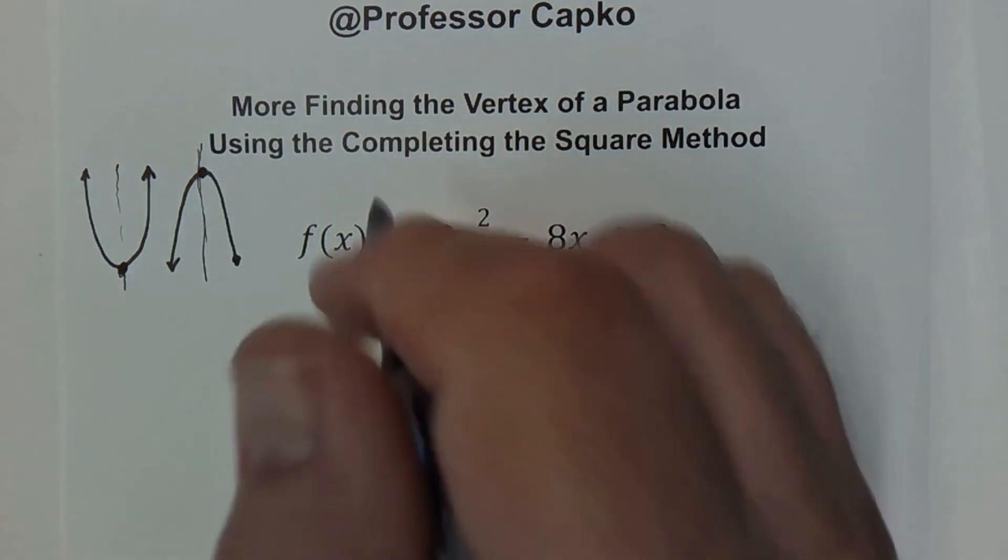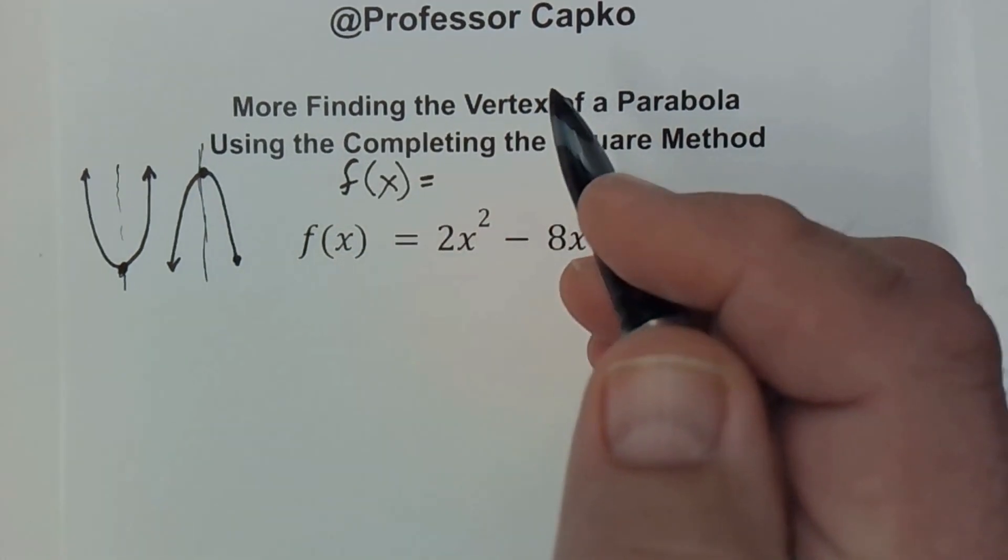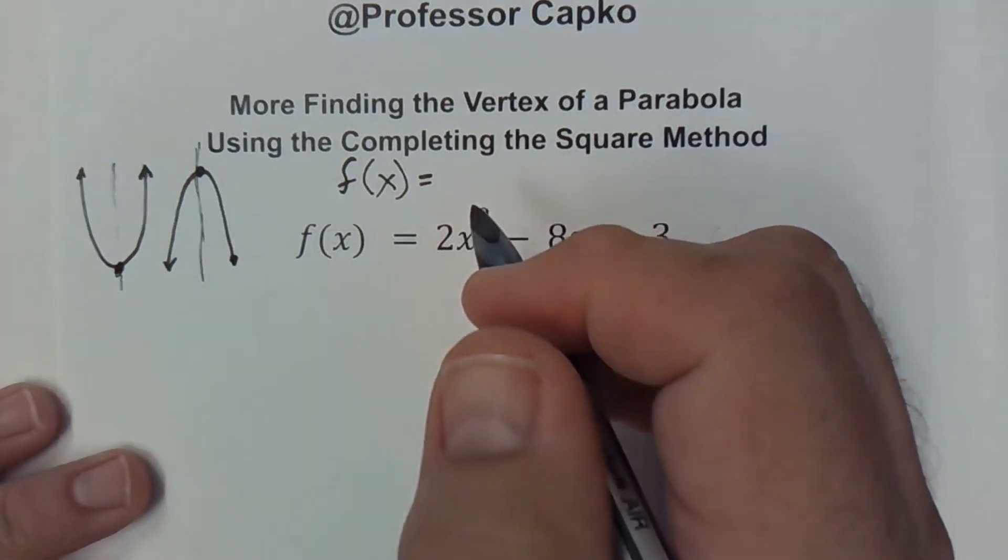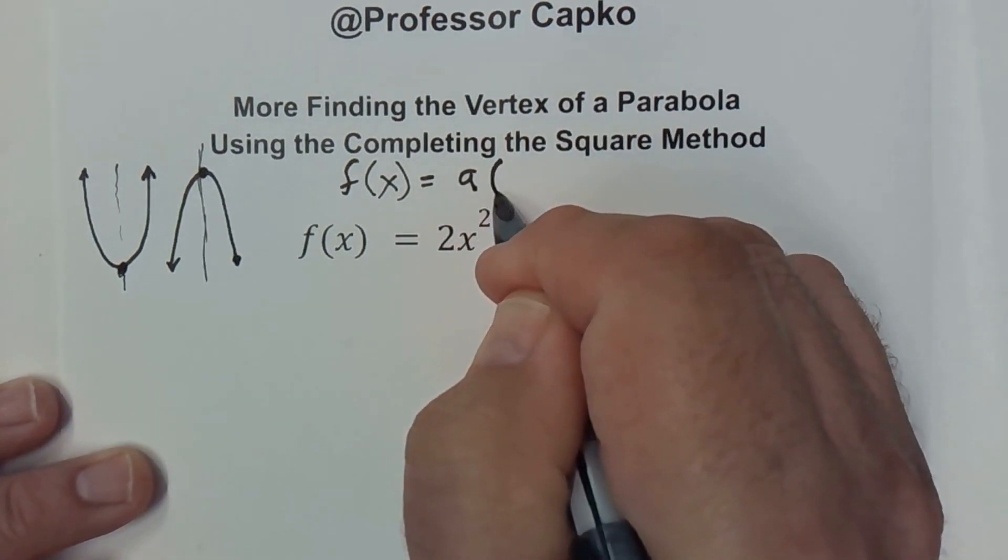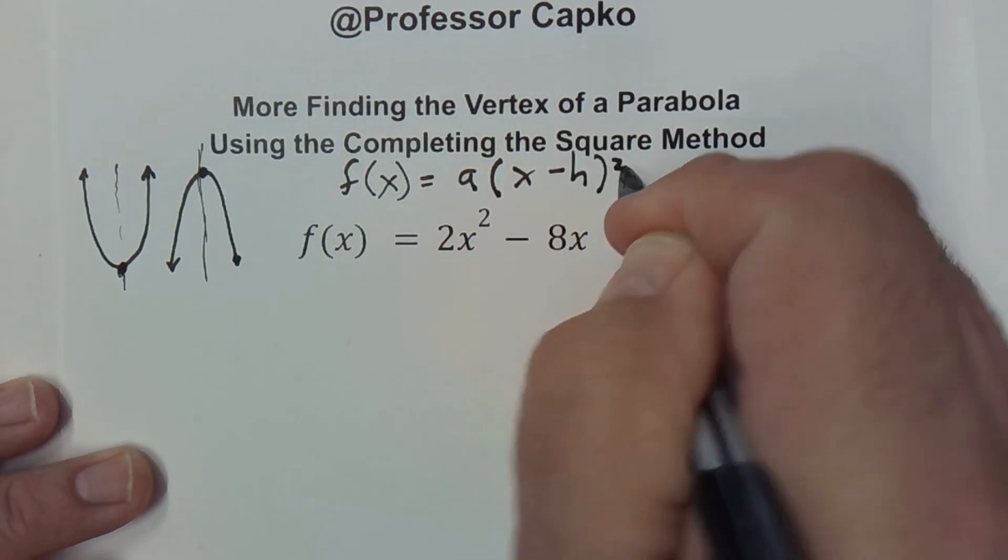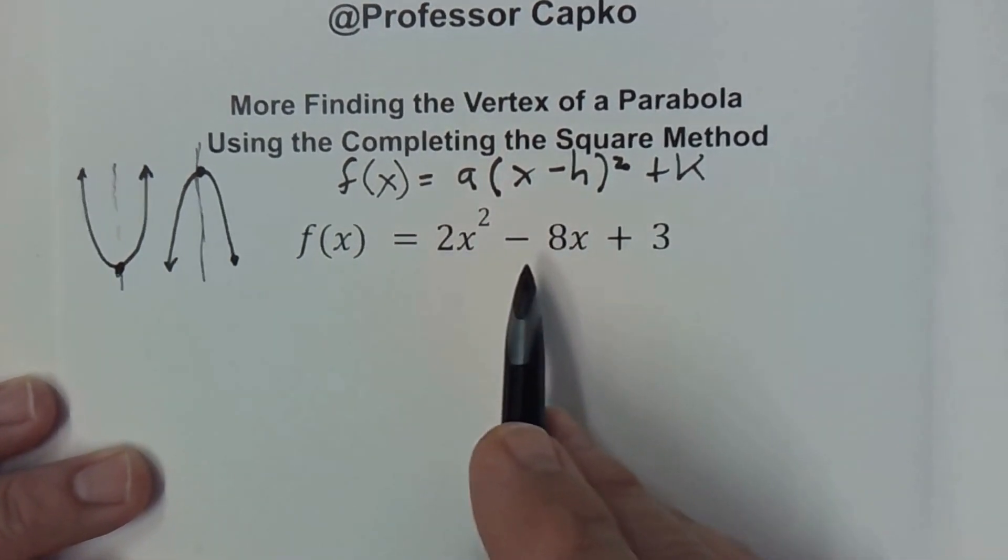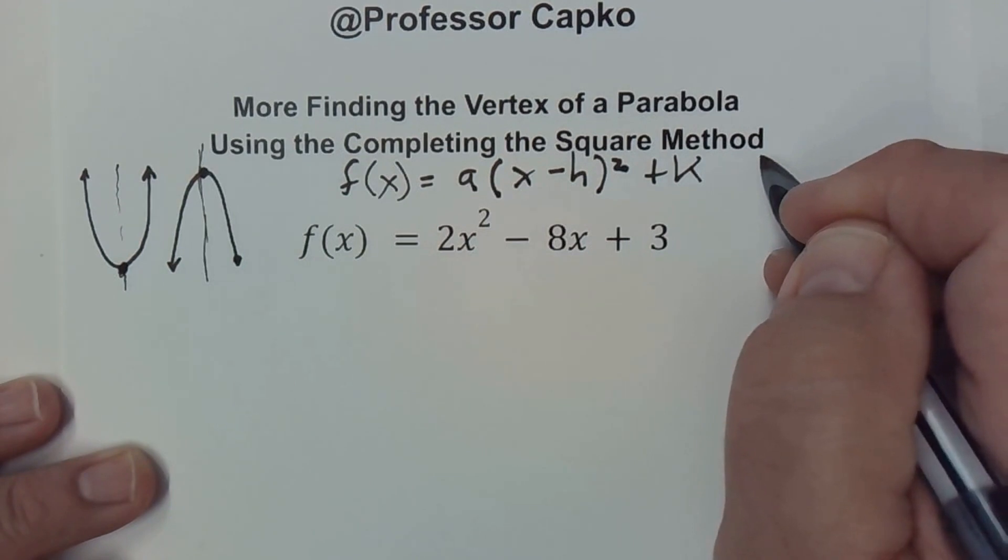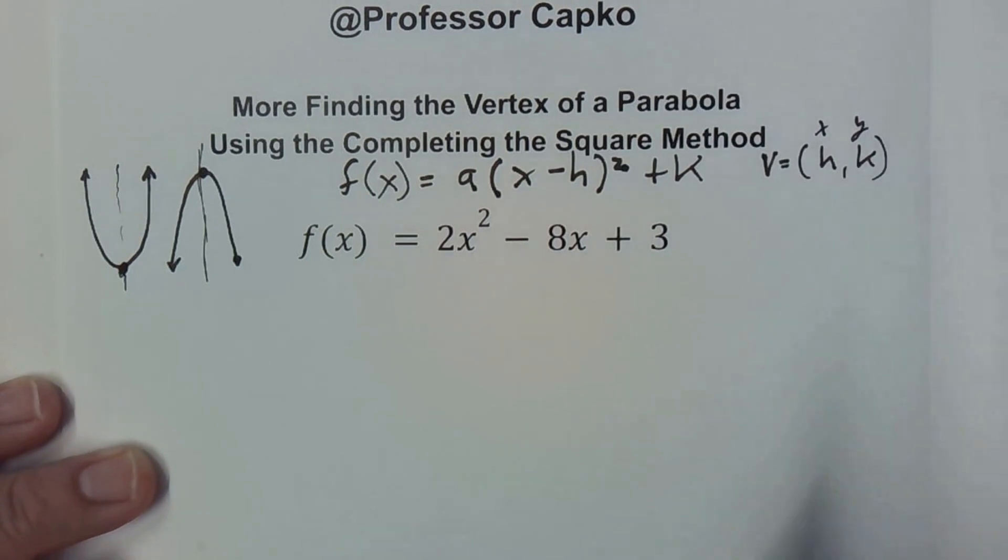Just a reminder, the formula for a vertex form is f of x is equal to a parentheses x minus h close parentheses squared plus k. That's the format we want to get this into. And if we have it in that format then our vertex is going to be equal to the h k which is going to be our x and our y terms.